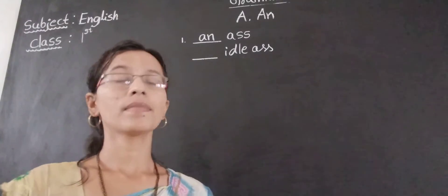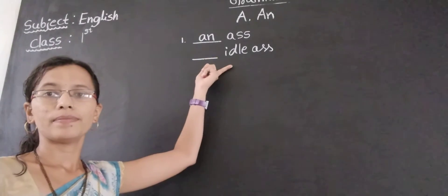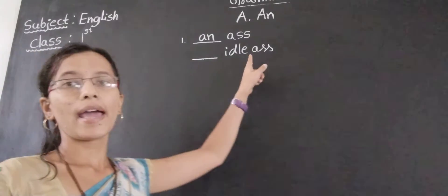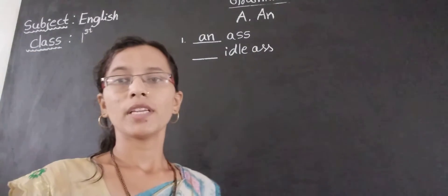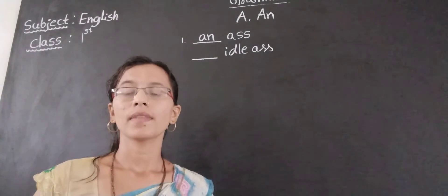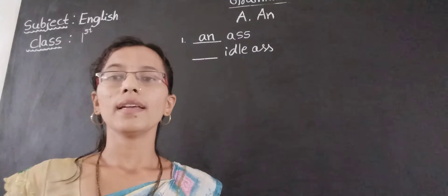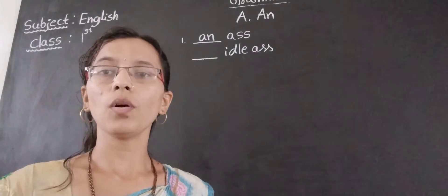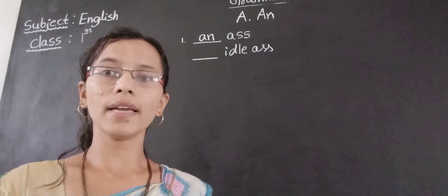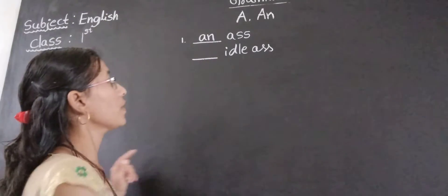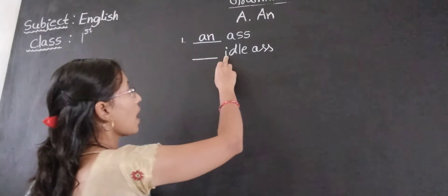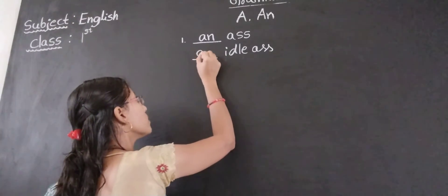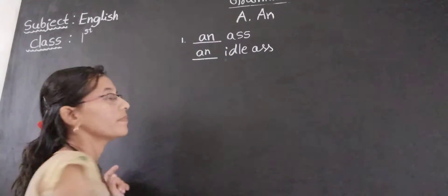Then the second one: I. So I means A, E, I, O — it's a vowel. Beginning of vowel sound, we have to use AN.